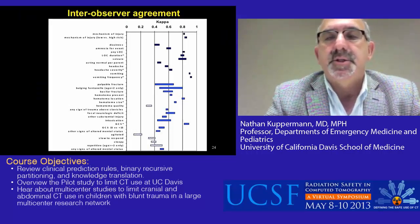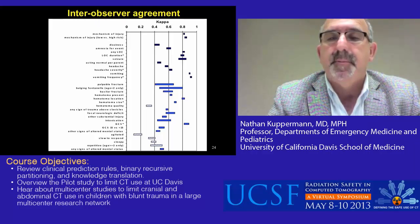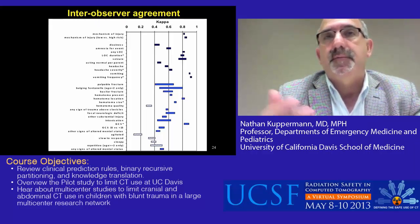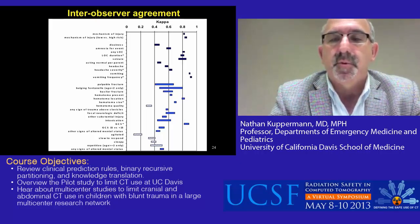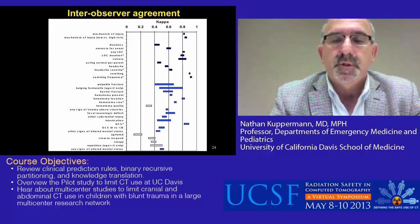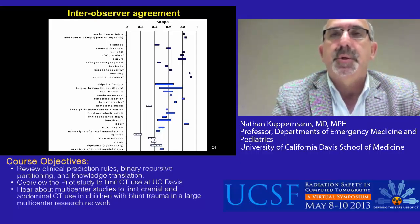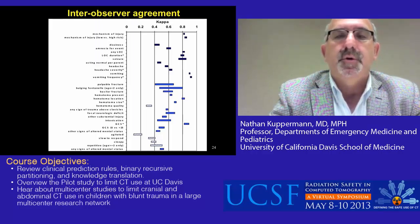This slide shows the inter-observer agreement — a kappa chart with bars representing the 95% confidence intervals around the kappa for variables considered for inclusion in the decision rule. If the lower end of the 95% confidence interval crosses 0.4, we would not consider the variable for use in the rule. For example, the quality of a scalp hematoma — whether it's boggy or not — had too low an inter-rater reliability, so that variable could not be included in the rule.